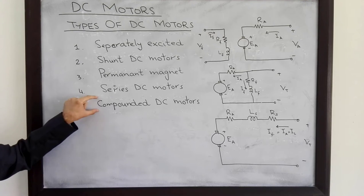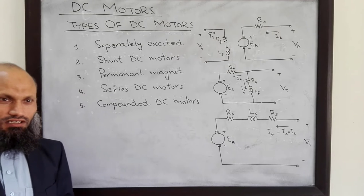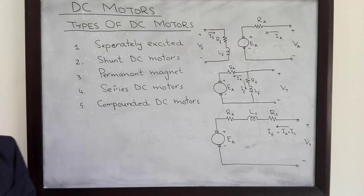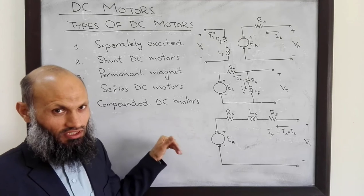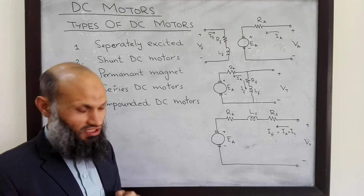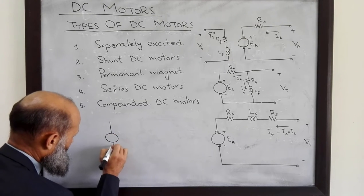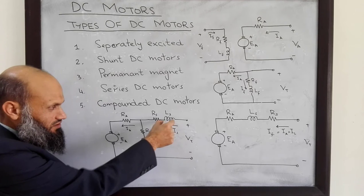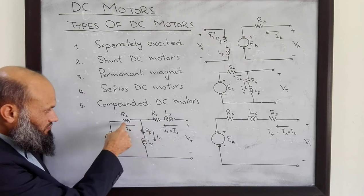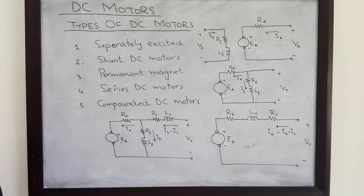Another type is compounded DC motors. In compounded DC motors, there are two parts of the field winding on the field circuit: one part of the field winding is in series with the armature circuit and another part is in parallel with the armature circuit. The equivalent electrical circuit of compounded DC motors is given by this diagram, showing two windings on the electromagnets.